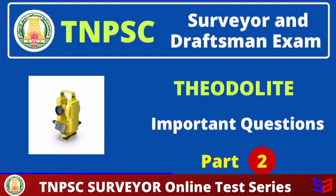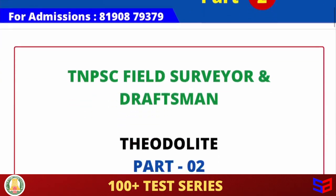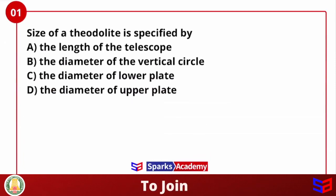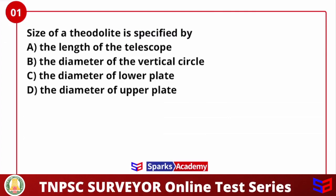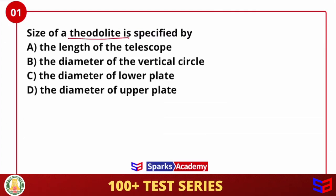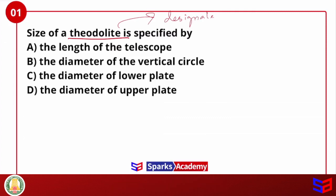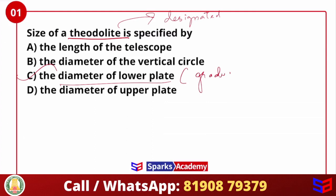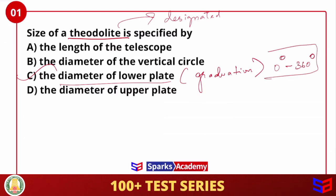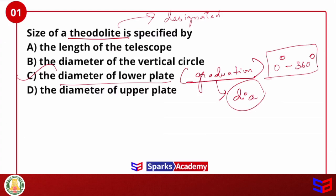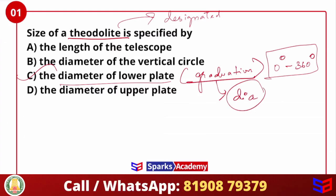The size of a theodolite is specified by: length of the telescope, diameter of the verniers, diameter of the lower plate, or diameter of the upper plate. We always go for diameter of the lower plate — that is the size of the theodolite. So the answer is C.